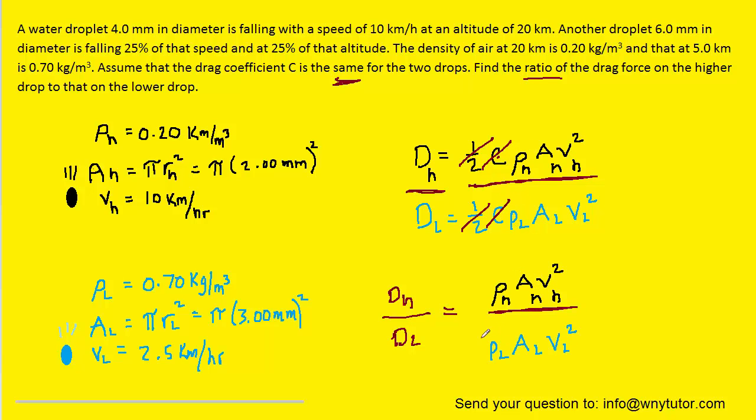So here is the simplified equation, and now we just have to go in and plug in the value for each variable for both the higher drop and the lower drop. Remember, all that information was stated here. So we're going to carefully plug in all the values now and see what we've got.